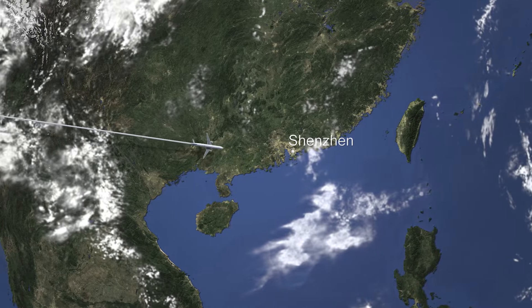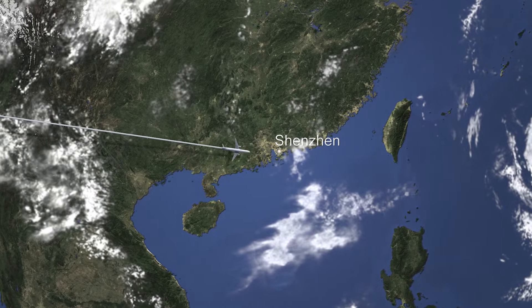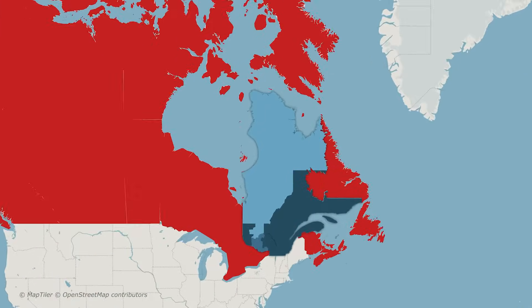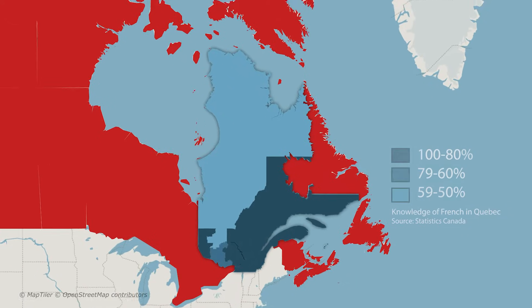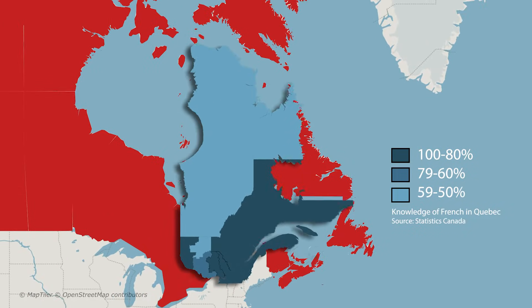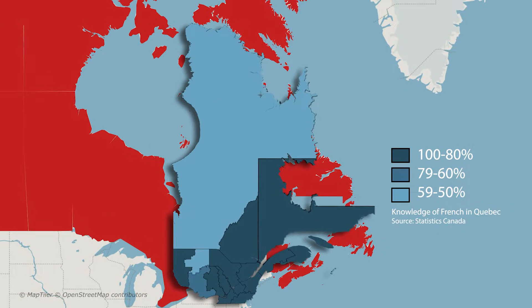We can see that Shenzhen is an example of a formal economic region, while the country of China is an example of a formal political region. We also have cultural formal regions, which are areas that have a common cultural trait, such as the French-speaking region of Quebec in Canada, which is a linguistic region centered around language.